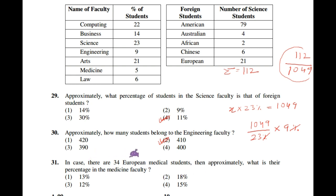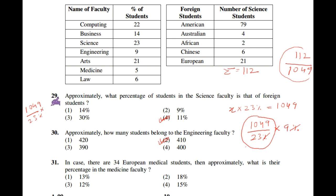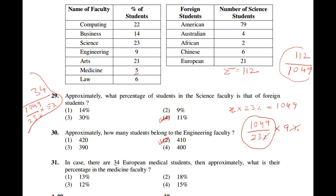A follow-up question: given that there are 34 European medical students, approximately what is their percentage in the faculty? The total number of medical students is 55% of X (where X = 1049 ÷ 0.23). The 34 European medical students out of the total medical students comes to approximately 15%. So the answer is approximately 15 percent.